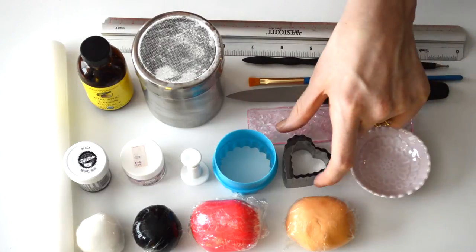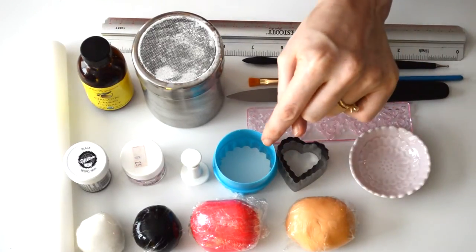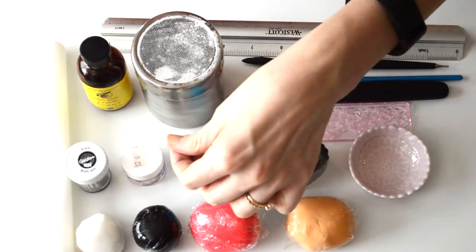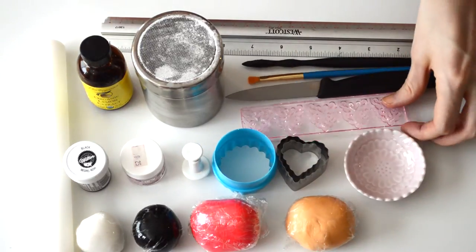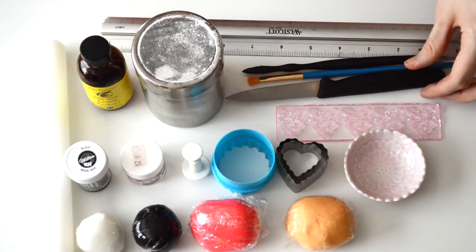You'll also need skin colored fondant, a medium sized heart cutter, a smaller heart cutter, a round cutter, a small flower plunger or cutter, something to emboss your dress if you would like (this is optional), and a paring knife.